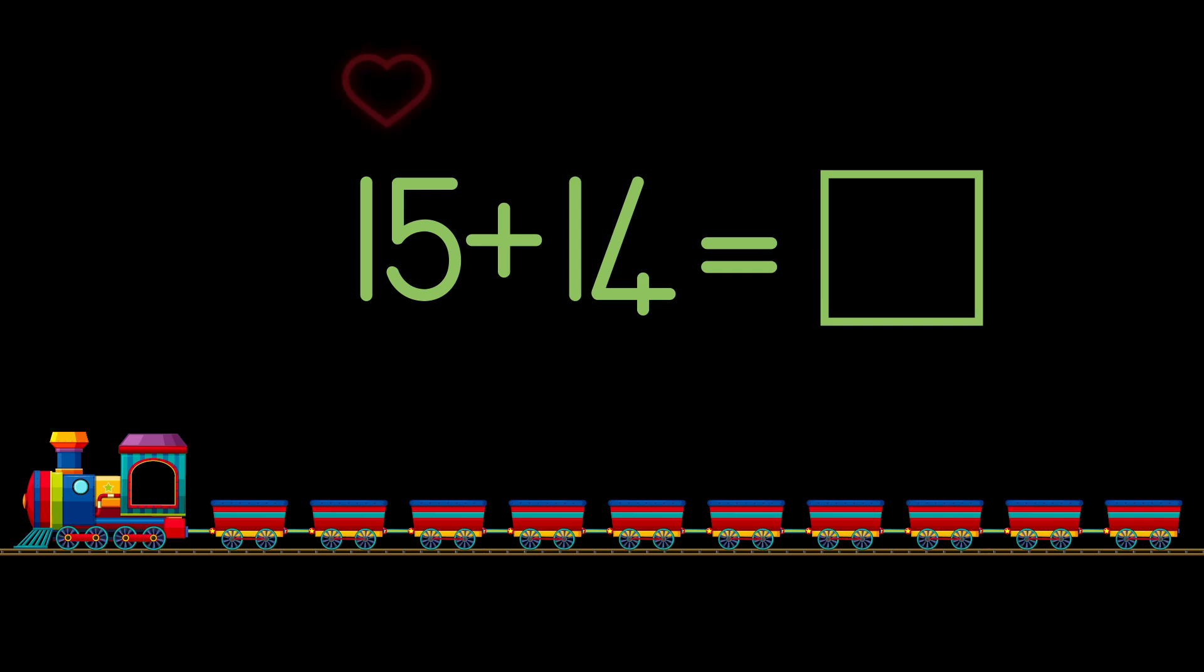First we draw the heart over the 15 to remind us that it is our special number which we do not break. Next we draw the flash of lightning above the second number to show that it is the number we are going to break.